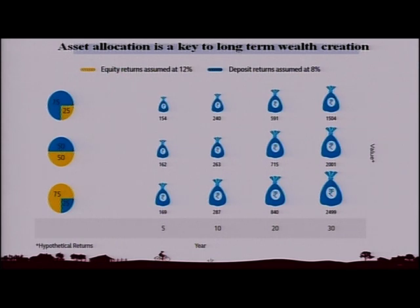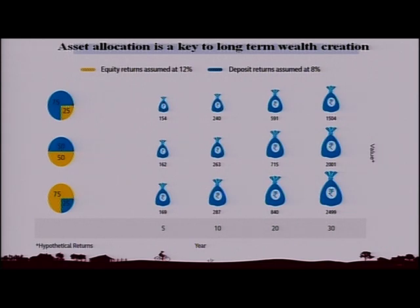Whereas if you make a similar investment with 75 percent as equity and 25 percent as fixed income, the return in 5 years jumps from 154 to 169 on 100 rupees, and from 240 becomes 287 over 10 years. But look at what happens in 30 years — the 1504 will become almost 2500 rupees. So there is almost a 75 percent increase over 30 years due to just the change of asset allocation.